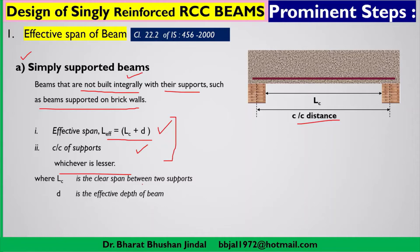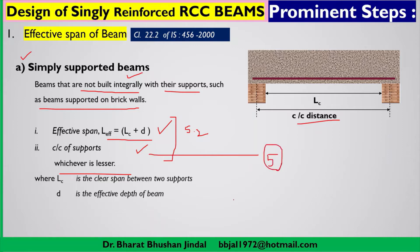LC is the clear span between two supports and d is the effective depth of the beam. For example, if L_effective from the first calculation comes out to be 5.2 m and the center-to-center distance is 5 m, then the effective span will be 5 m — the lesser value is taken.